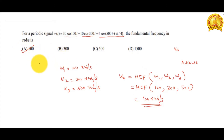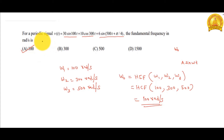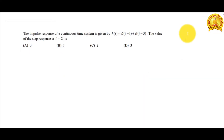The answer is option A, that is 100 radians per second. This question is related to the periodic signal classification. Now we move to the next question, which is related to an LTI (Linear Time Invariant) system.